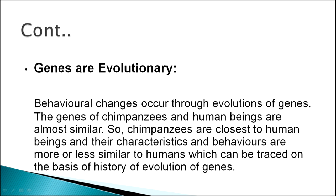Hemophilia is another example: in the British royal family, the females were carriers of the hemophilic condition. Queen Victoria, who was a carrier of the hemophilic gene, had sons who had hemophilia and therefore suffered from this disease. Genes are evolutionary — behavior changes occur through evolution of genes. For example, the genes of chimpanzees and human beings are similar but different because humans have evolved. Chimpanzees are closest to human beings, and their characteristics and behavior are more or less similar to humans, traceable on the basis of the history of gene evolution.